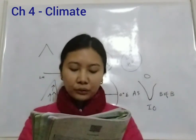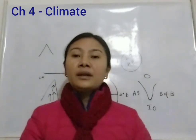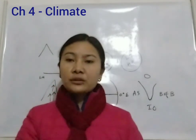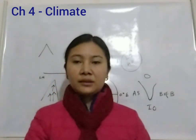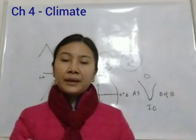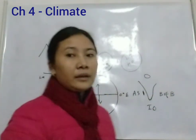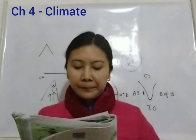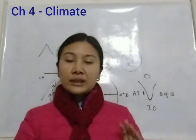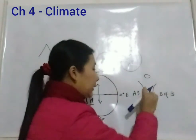Ocean currents along with onshore winds affect the climate of coastal areas. Ocean currents can be warm or cold. Onshore winds passing over warm ocean currents will be warm, and those passing over cold currents will be cold. Any coastal area with warm or cold currents flowing past it will experience warm or cold climate respectively, depending on whether the winds are onshore.